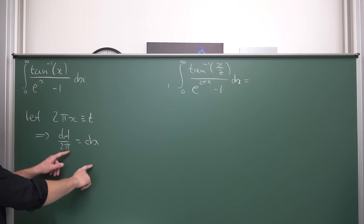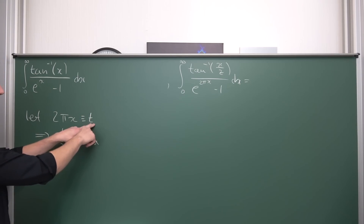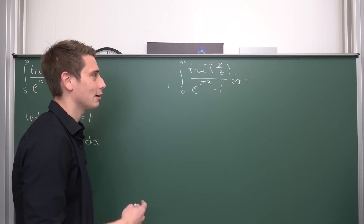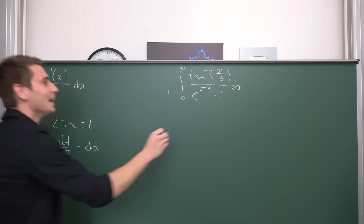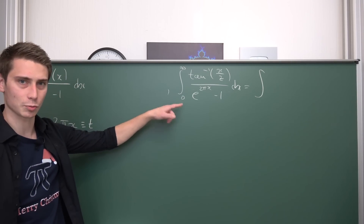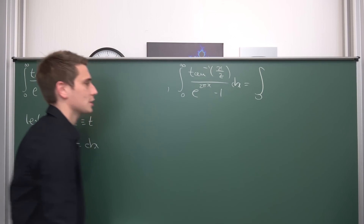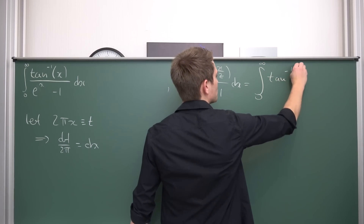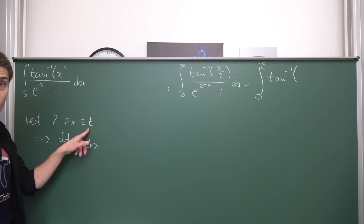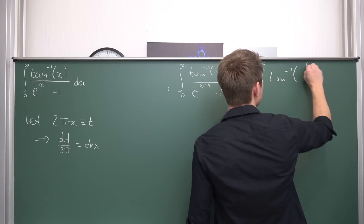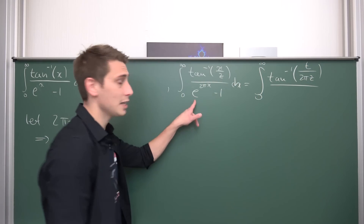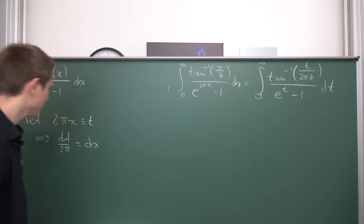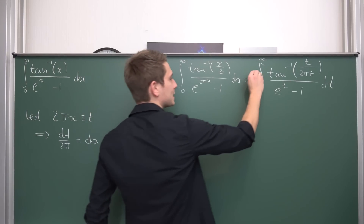Now we are going to plug our new definitions in. Notice that t is nothing but 2π·x, meaning x is nothing but t over 2π. We are going to get an integral: for the bounds, plugging 0 gives 0, and as x goes to infinity 2π is positive so our upper bound also goes to infinity. We are left with the inverse tangent of — since x turns into t over 2π — we are going to have t over 2π·z in the inverse tangent argument. Divided by e to the t minus 1, integrated with respect to t, with a factor of 1 over 2π out front from the linearity of the integral.